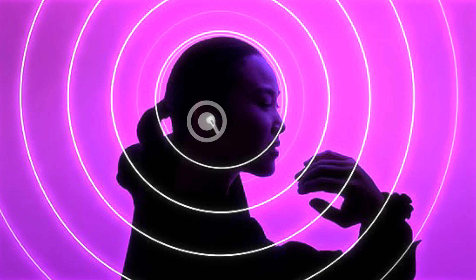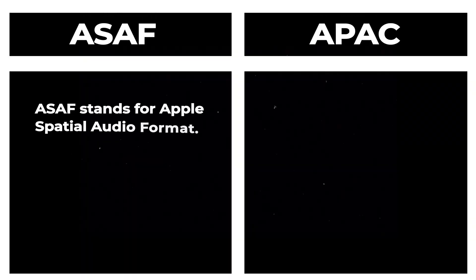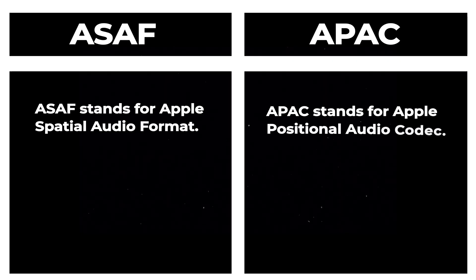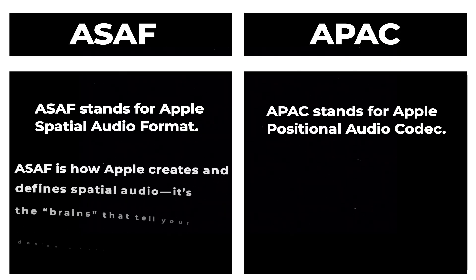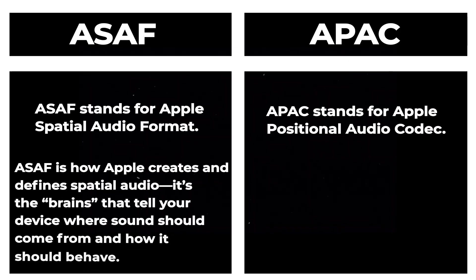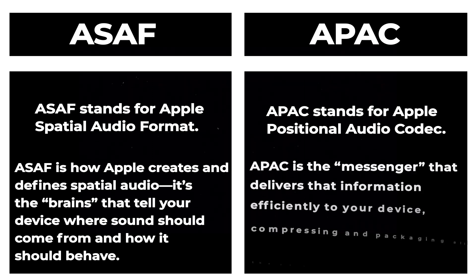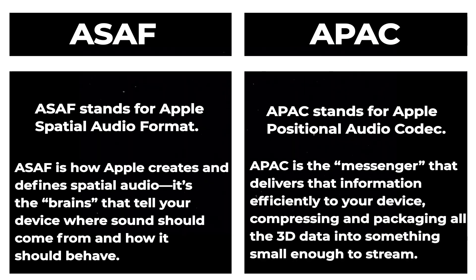They don't just move sound around your head — they make it smarter, more adaptive, and more consistent everywhere. ASAF stands for Apple Spatial Audio Format, and APAC stands for Apple Positional Audio Codec. You can think of them as two parts of the same system. ASAF is how Apple creates and defines spatial audio — the brains that tell your device where sound should come from and how it should behave. APAC is the messenger that delivers that information efficiently, compressing and packaging all the 3D data into something small enough to stream but powerful enough to sound real.